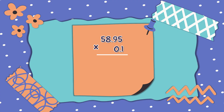Let us multiply 58 and 95 hundredths by one-tenth. Same procedure: write the numbers in column and start multiplying from right going to the left. So, 58 and 95 hundredths times 1 is 5,895. Then, 58 and 95 hundredths times 0 gives us 0.